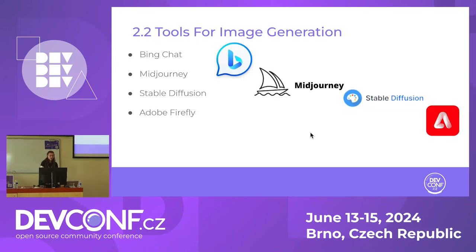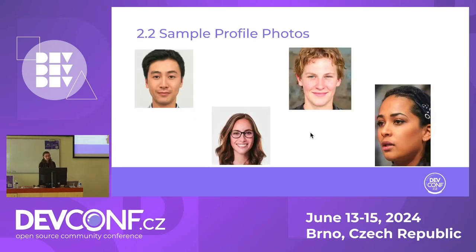For tools, we used the Bing Explorer chat, which uses the Microsoft Copilot model in the background. We tried Midjourney, Stable Diffusion, and the Adobe Firefly model, which is available as a standalone website as well as being built into Adobe products. We found that Midjourney and Adobe Firefly were the best — they generated very photorealistic images of people. Here are some examples: they look like someone actually took the picture. Very impressive.